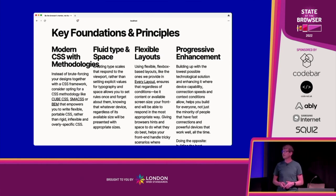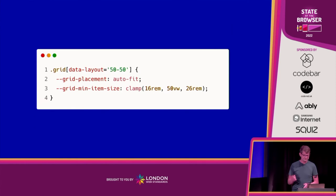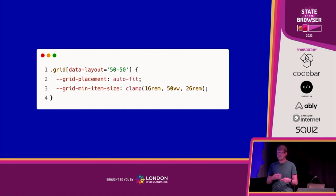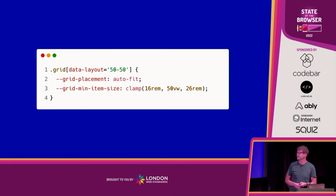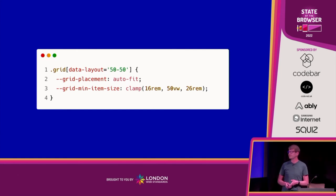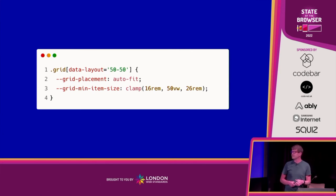We're going to use a CUBE CSS exception. In the HTML I'm using `data-layout='50-50'`, creating a two-column grid. In this exception we're not writing any actual CSS — all we're doing is defining the custom properties. The first one uses `auto-fit`, which unlike `auto-fill` allows columns to stretch into space. The second uses our new best friend `clamp`, with 16rem as the minimum and the most important part in the middle: aim for 50 viewport width — 50% of the screen.